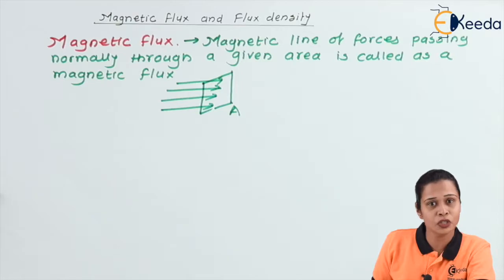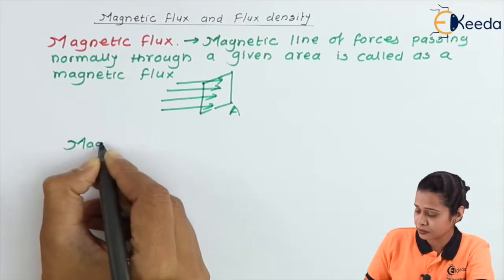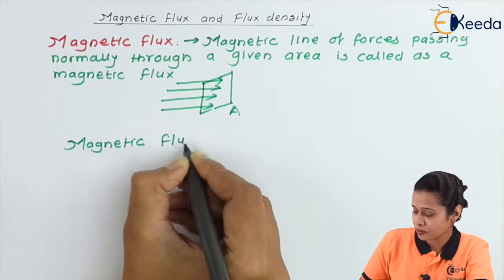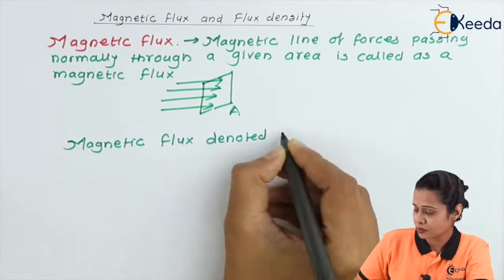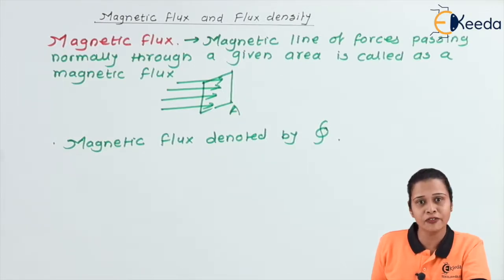Magnetic flux denoted by phi. And SI unit for magnetic flux is Weber.